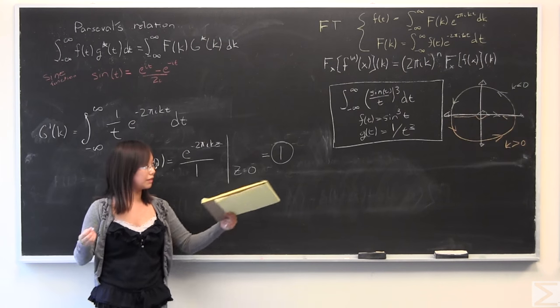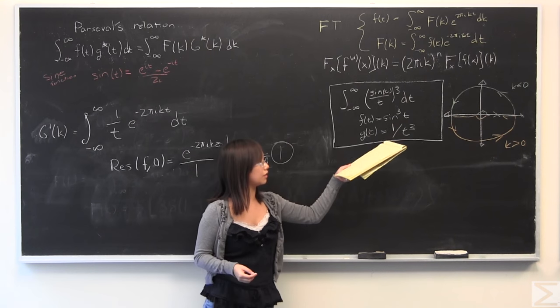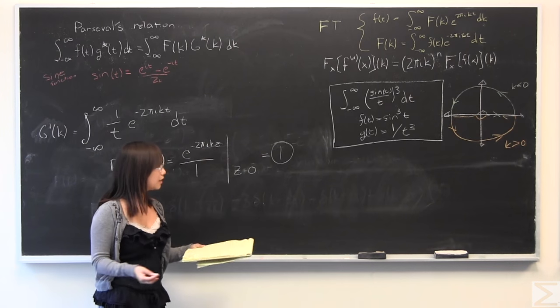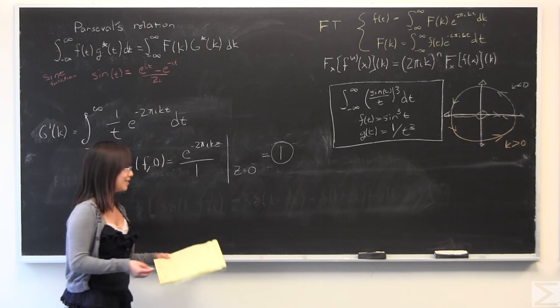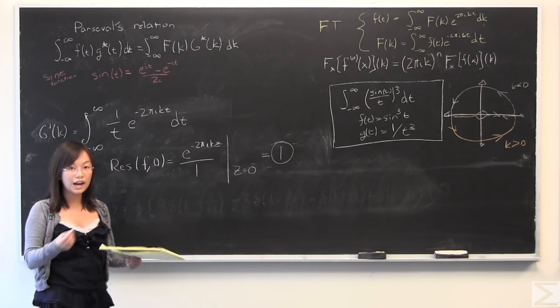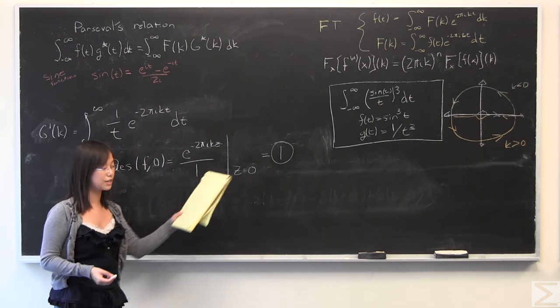So since we have a simple pole, we have half a simple pole, if you see in the contour, it's going around half the point, I like to say. This is a legal move, so that would mean this is equal to half times 2π i times this residue.